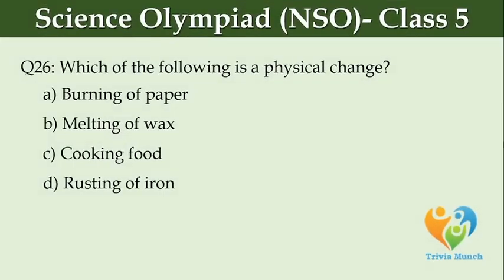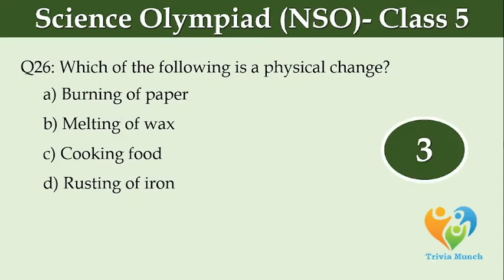Which of the following is a physical change? Option A: burning of paper, Option B: melting of wax, Option C: cooking food, Option D: rusting of iron.